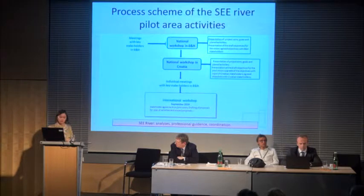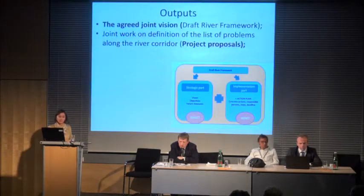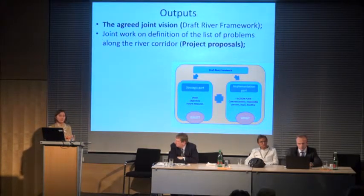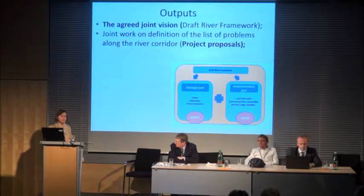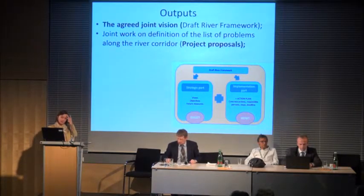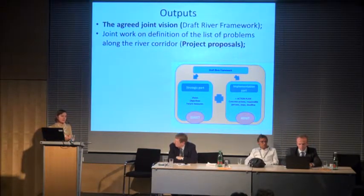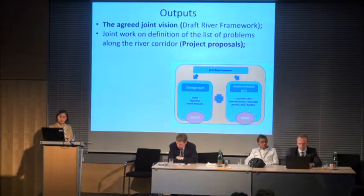It was a very valuable experience for the Neretva River Corridor. As a main output after the national workshops held separately in Bosnia and Herzegovina and Croatia, we added all comments to a draft joint vision for the Neretva River Corridor, which was in line with different EU directives. After agreeing on the joint vision — which we named the draft river framework — we made a list of problems as ideas for future project proposals for the continuation of this project, including transnational project proposals and projects within different sectors.